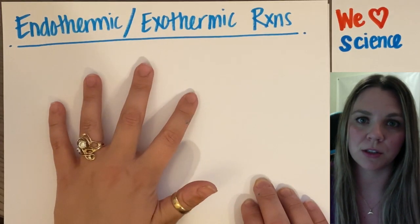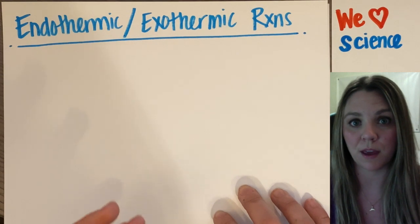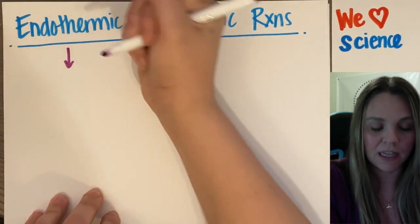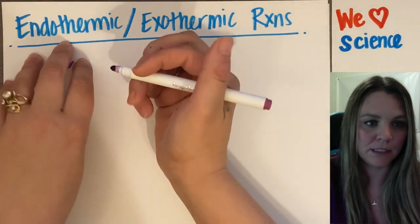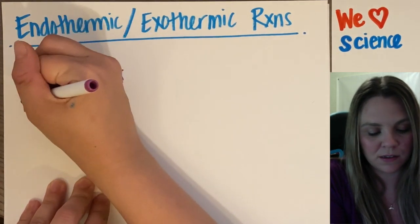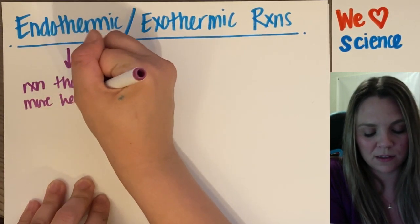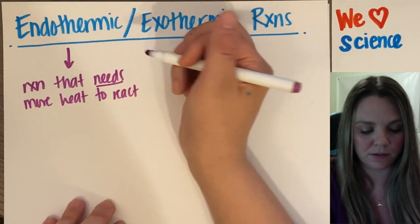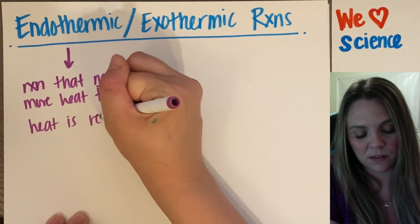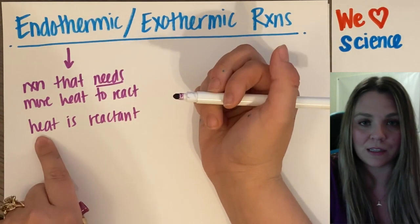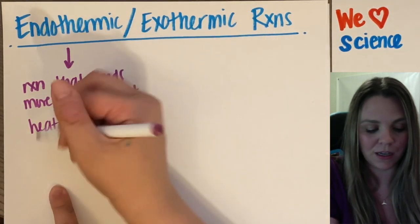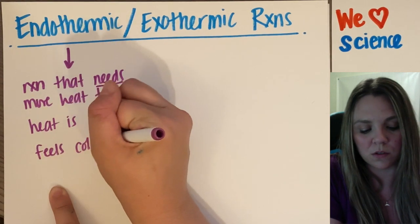Endothermic and exothermic reactions are just another way to classify types of chemical reactions. An endothermic reaction is a reaction that needs more heat to react than it gives off, which means heat is a reactant — because it needs more heat to react than it gives off, and that means it feels cold.